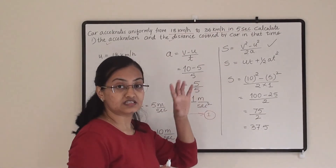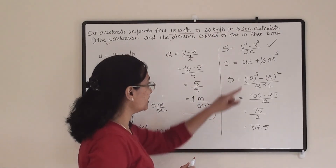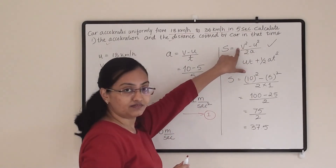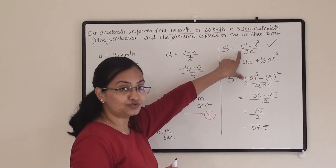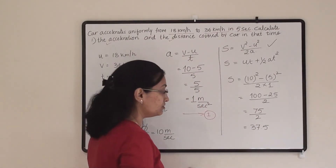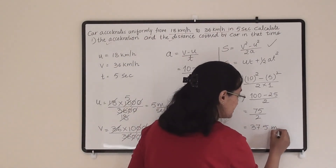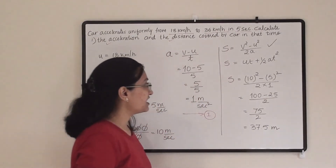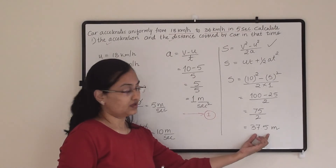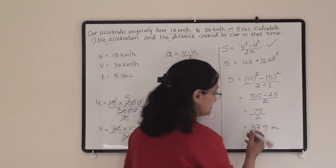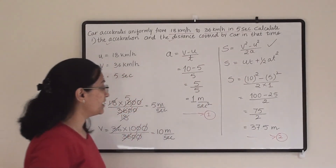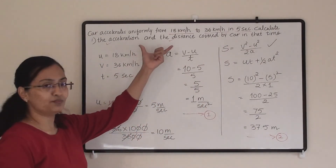Now how do you choose the unit for the distance — whether it is kilometers or meters? Check the units of initial and final velocity. If they are in meter per second, you will get distance in meters. If they are in kilometer per hour, the distance will be in kilometers. Since ours are in m/s, our second answer is 37.5 meters — the distance travelled by the car during uniform acceleration.